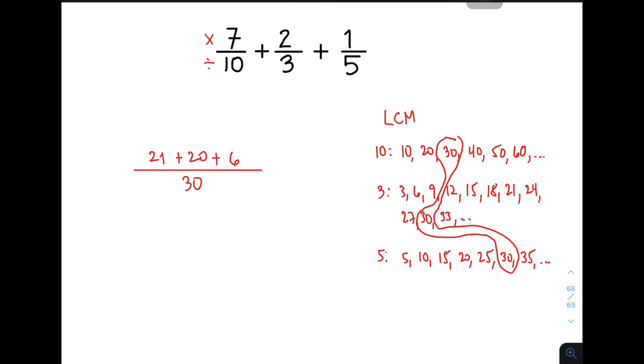And adding your numerator, that is 21 plus 20, that will give you 41, plus 6, that is 47, over 30. Now, that is an improper fraction. Try to simplify it first. Or you can treat this as your final answer.